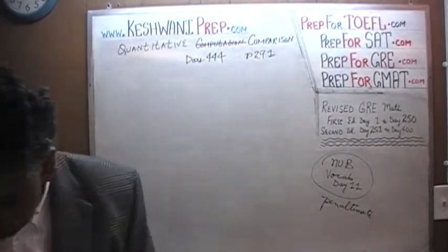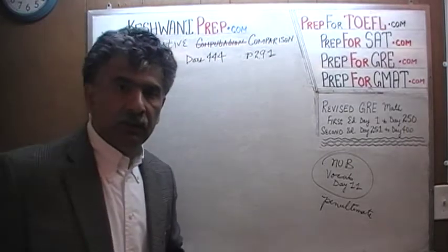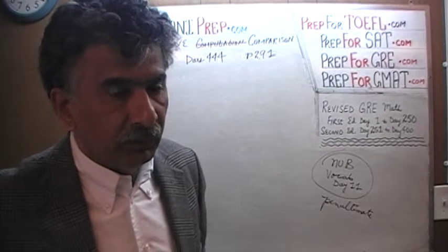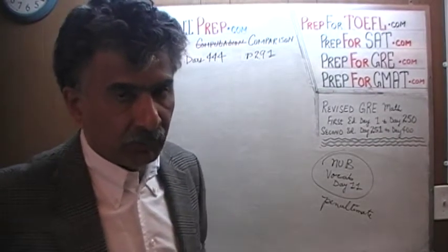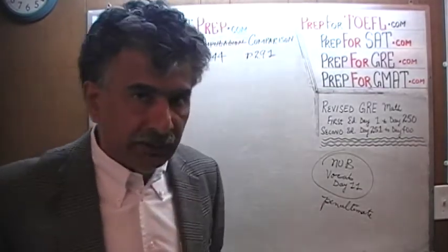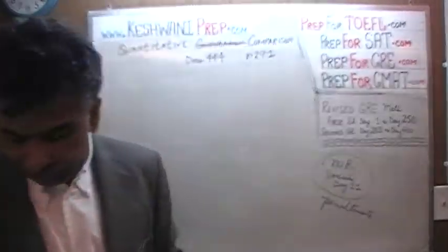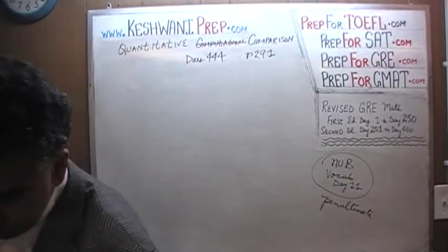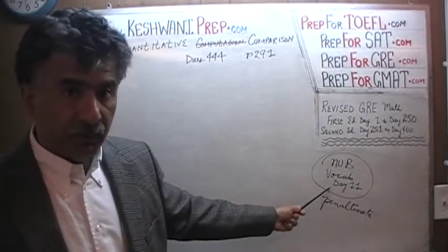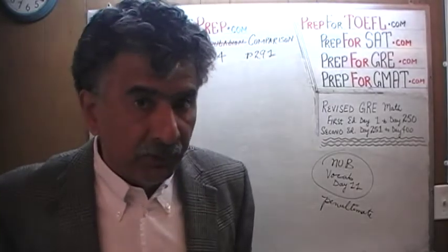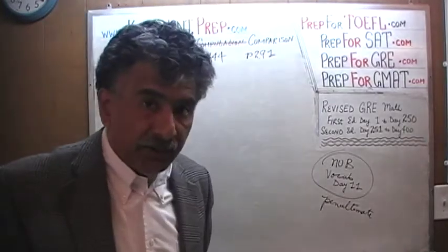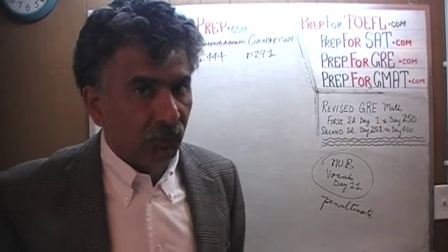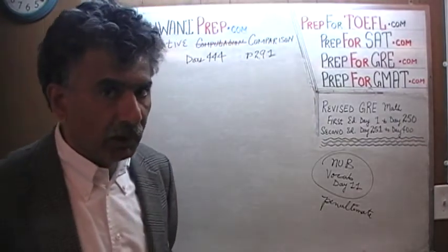While we are talking about penultimate and vocabulary: yesterday in our last video, the word 'nub' cropped up in the lecture. What does nub mean? N-U-B. Nub means the essence, the main idea, the core of the problem. We learned that word in our vocabulary lesson on day number 11. If you are interested in improving your vocabulary, just type in 'GRE vocabulary words day number 11' and you will learn this word along with some other good words that will help you get a better score in the English portion of the exam.